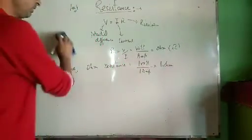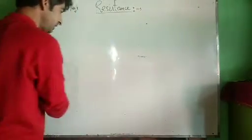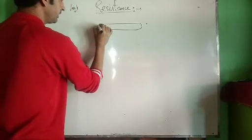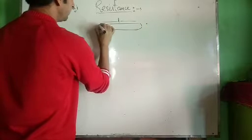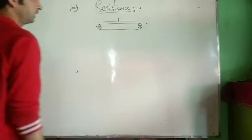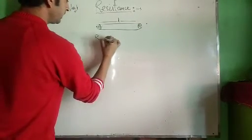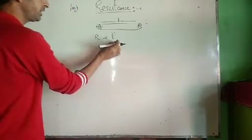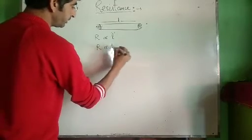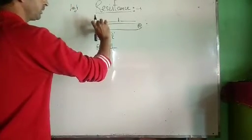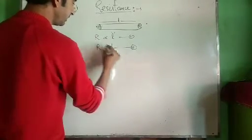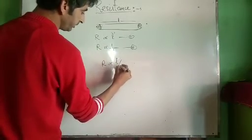Now let us see on what factors resistance actually depends. Consider a conductor of length L and area of cross-section A. Resistance is directly proportional to the length of the conductor — the greater the length, the greater the resistance. It is inversely proportional to area of cross-section — the greater the area, the smaller the resistance.